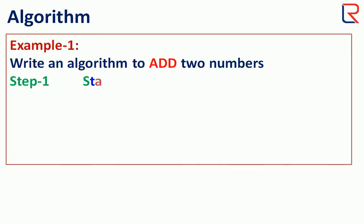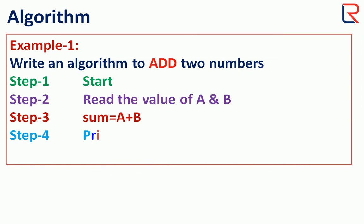Let's have an example to add two numbers. So start, and now we need to input or read two numbers. So read the value of A and B, that is A is the first number and B is the second number. Now it's time to calculate the value, so sum equals A plus B, and show the value. So print sum and stop.